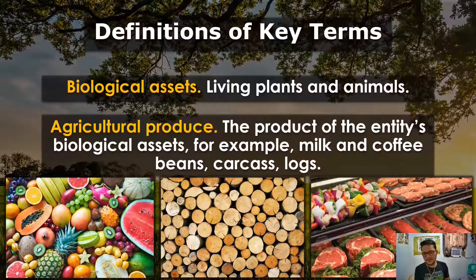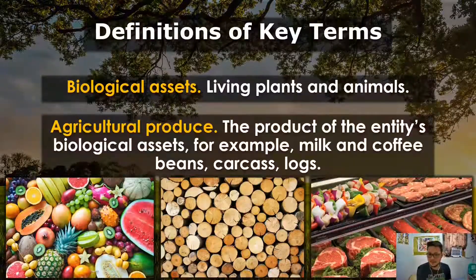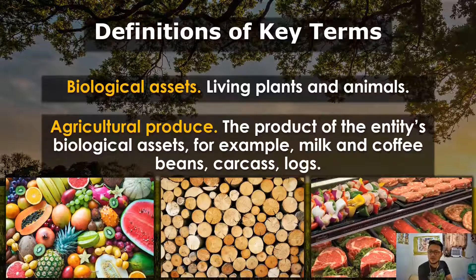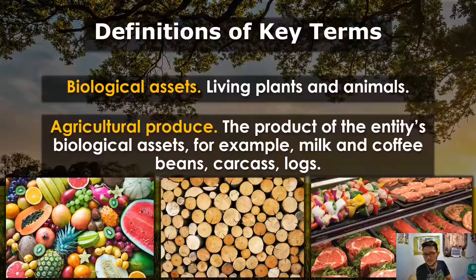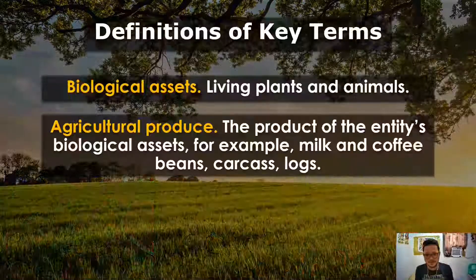For example, meat. How do you harvest meat? It's by the cessation of the life processes of a biological asset — this is the slaughter of cattle or pigs. Logs work the same way; in order to convert a plant to lumber, you need to discontinue its life processes. However, agricultural produce can also pertain to fruits, which does not necessarily end the life process of the biological asset itself.